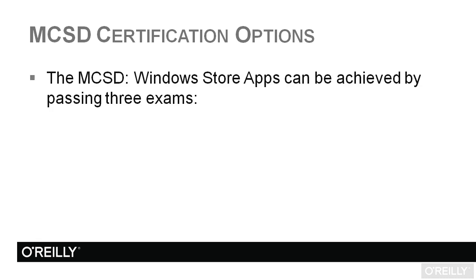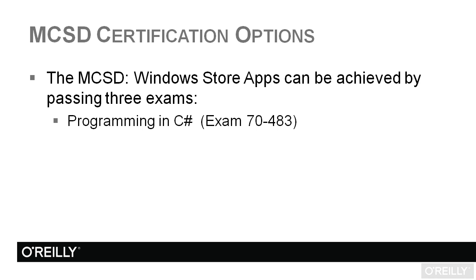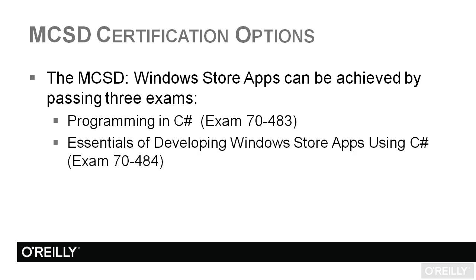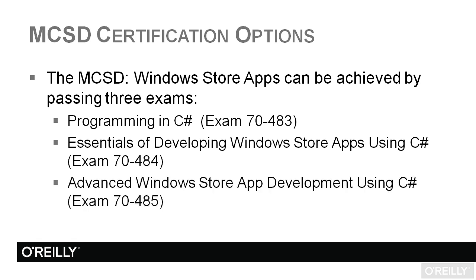The MCSD Windows Store Apps can be achieved by passing three exams. First, Programming in C#, which is exam 70-483 — that is the course you're watching right now. After this exam, you can move on to Essentials of Developing Windows Store Apps Using C#, which is 70-484. And finally, exam 70-485, Advanced Windows Store App Development Using C#. Once you've passed these, you will achieve the MCSD certification for Windows Store Apps.